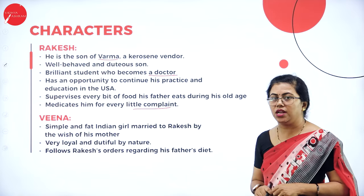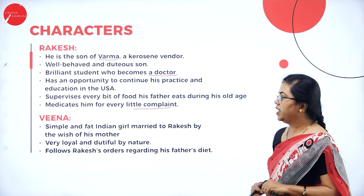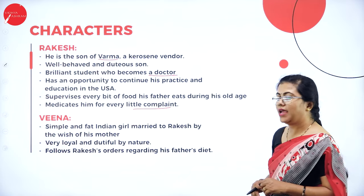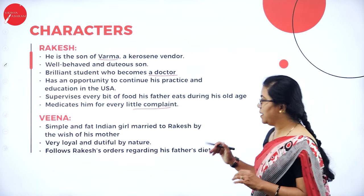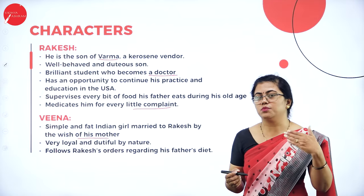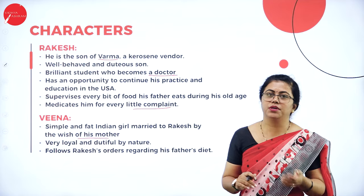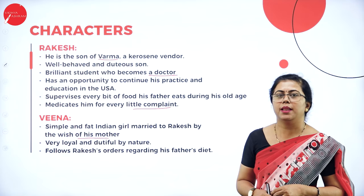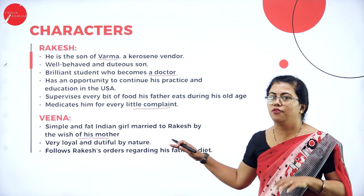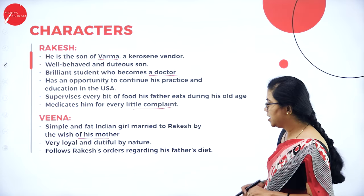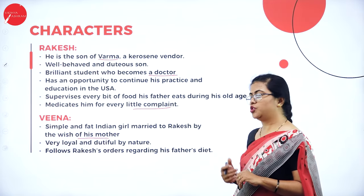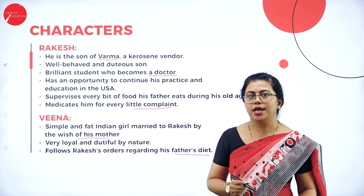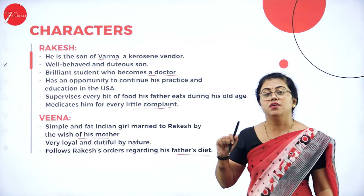The next character is Veena, a minor character. She was a simple, typical Indian woman — the wife of Rakesh — married by the wish of his mother. She was very loyal and dutiful, like Rakesh, loyal to the family and her husband. She follows Rakesh's orders when it comes to the father's diet and follows all instructions properly.